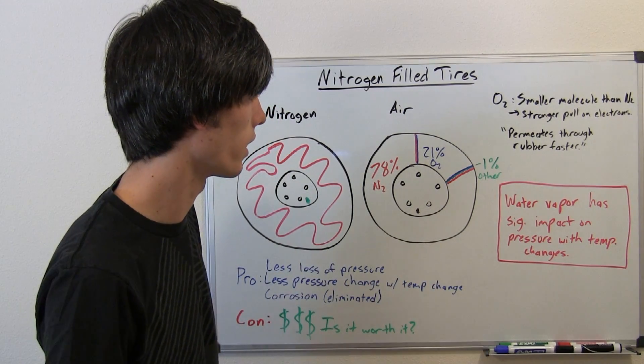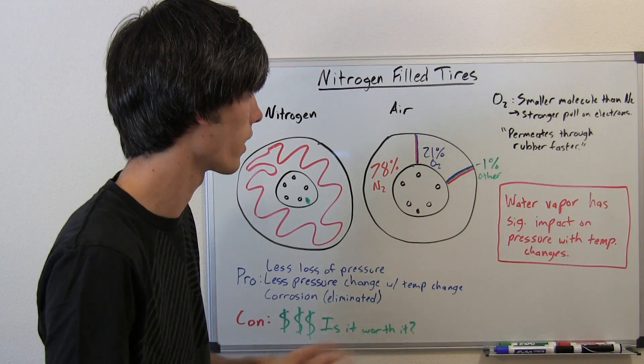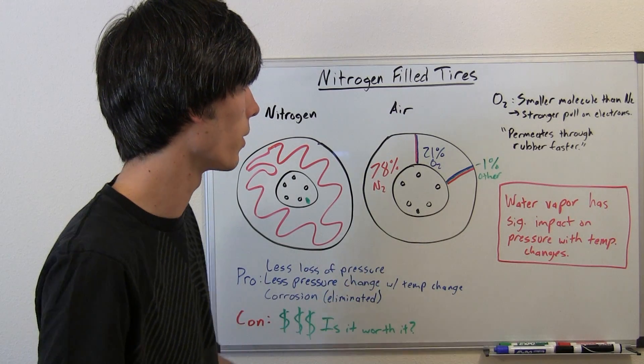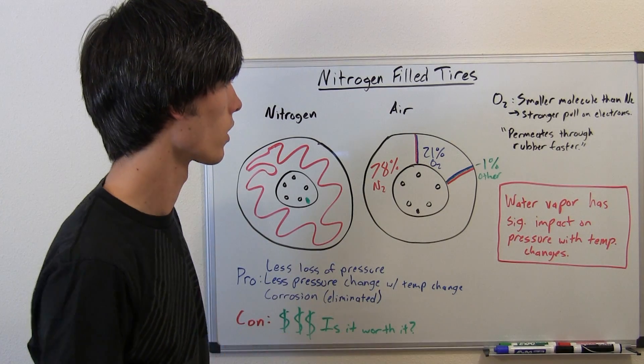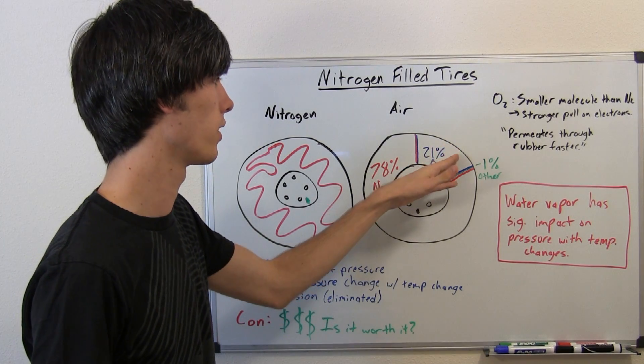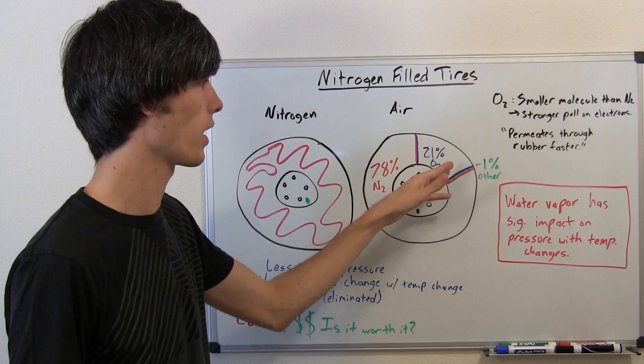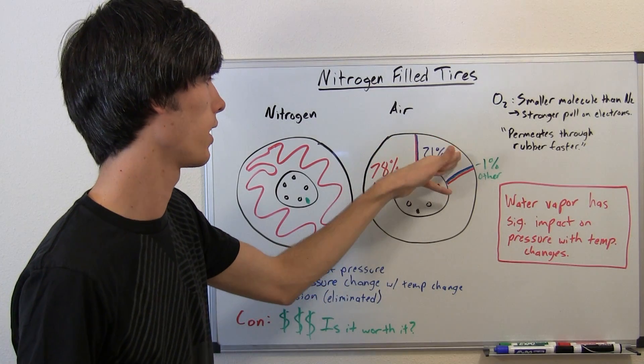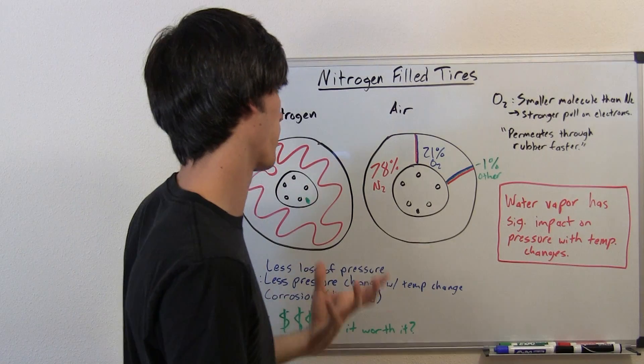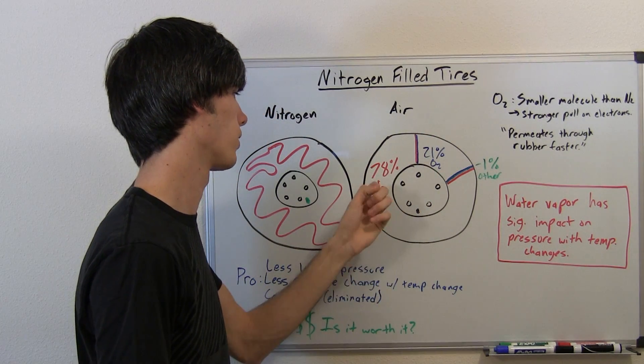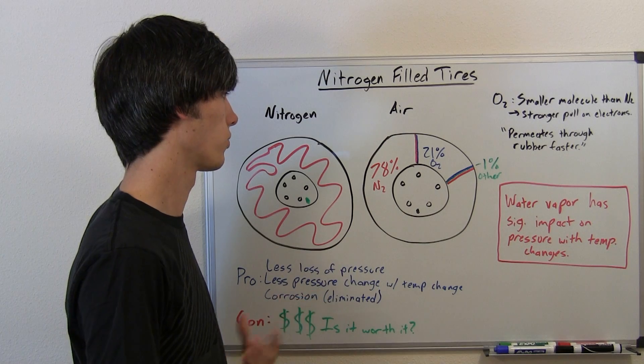I mean, it's millionths of a millimeter or something like that. It's a very small number, but this allows it to permeate through rubber more quickly. What that means is one-fifth of your tire has a substance, an air molecule, that can permeate through the tires more easily than nitrogen.